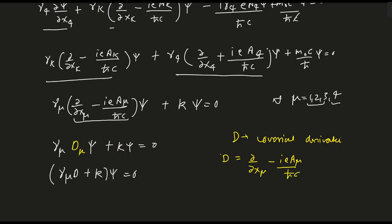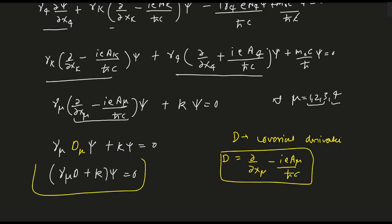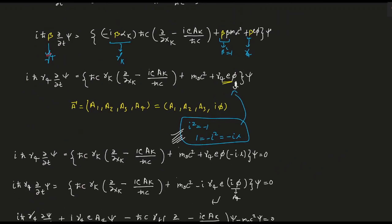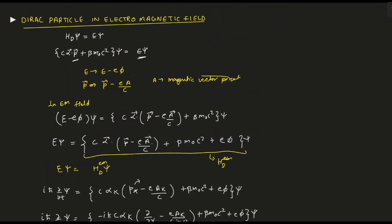This gives the final compact form: gamma_mu D_mu psi plus kappa psi equals zero, where D_mu is the covariant derivative del/del x_mu minus ie A_mu/(h-bar c). This is the main expression for the Dirac particle in an electromagnetic field. This has been a lengthy derivation compared to others.